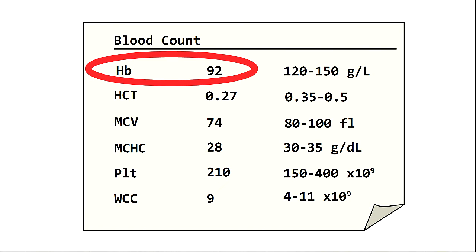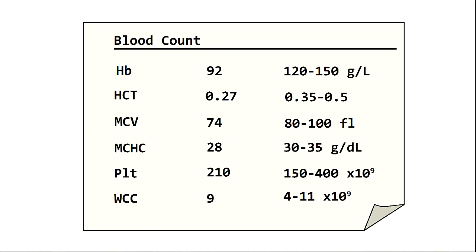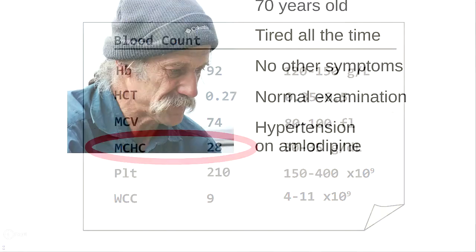All the tests you requested for this patient were normal except for the blood count. The Hb is 92, the MCV is 74, and notice also the mean cell haemoglobin concentration is low at 28. What are the possible causes for a microcytic anaemia?